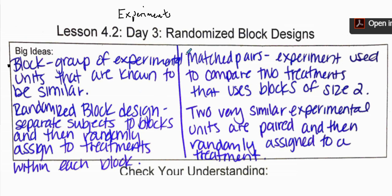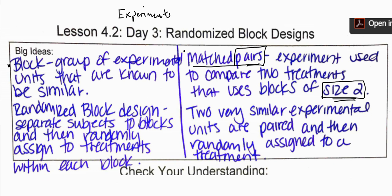Another type of block design is known as matched pair design. A matched pair is an experiment used to compare two treatments that uses blocks of size 2. The key thing in matched pair design is that pairs are size 2. These two experimental units are very similar, with many similar qualities, and they are paired and then randomly assigned the different treatments.